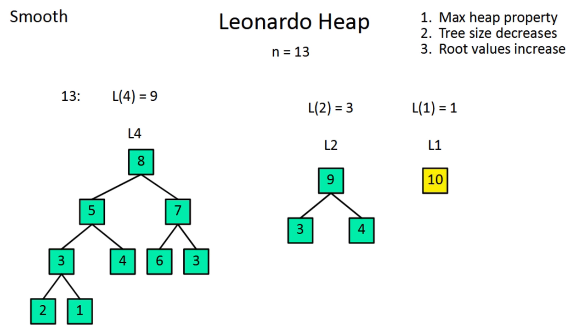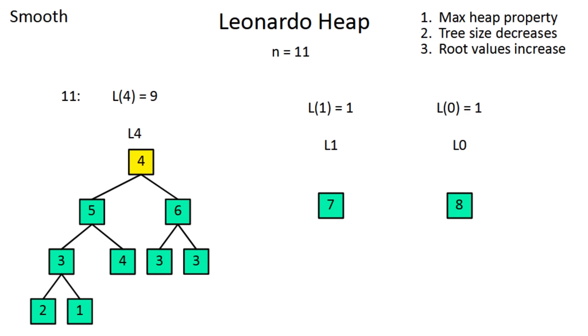Extracting the max is a bit easier. It will always be the root of the rightmost tree. If that's a level 1 or 0, you can simply remove it. Otherwise, removing it will create two new trees, so you have to do the insertion step on both of those.